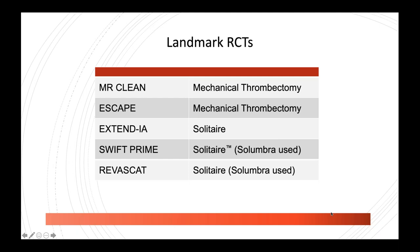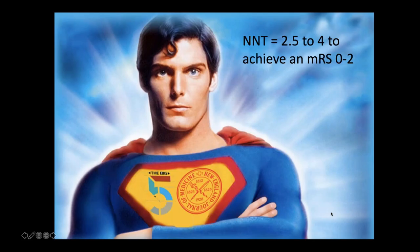In 2015, five major international trials all showed the strong treatment effect of mechanical thrombectomy — the landmark randomized controlled trials referred to as the 'Big Five,' all published in the New England Journal of Medicine. We uncovered one of the strongest treatment effects in medical history. The number needed to treat is anywhere from 2.5 to 4 to achieve an mRS of 0 to 2 — meaning the patient is able to live independently.